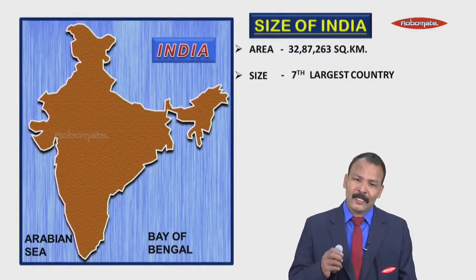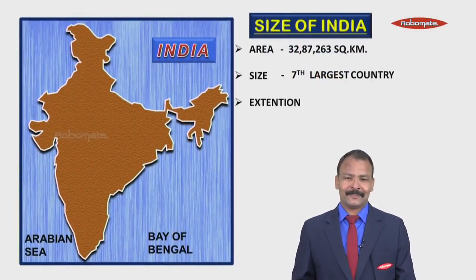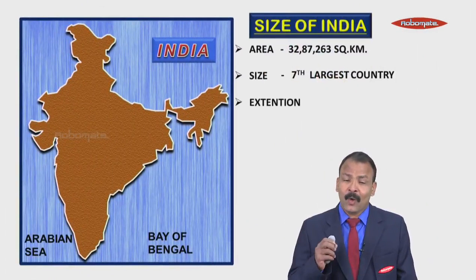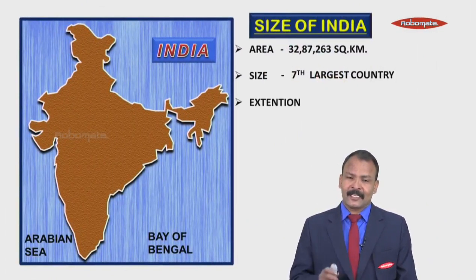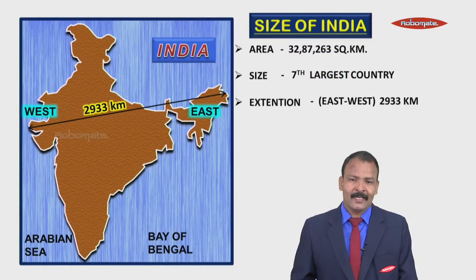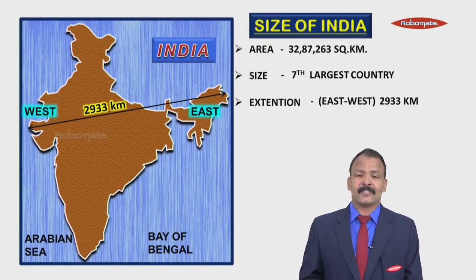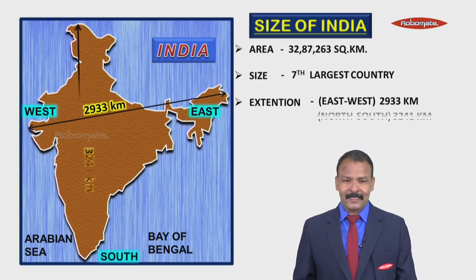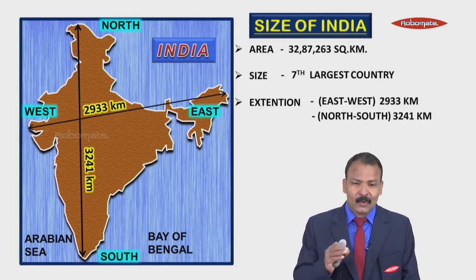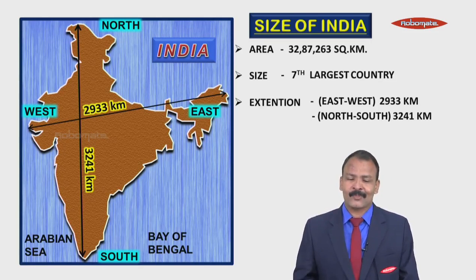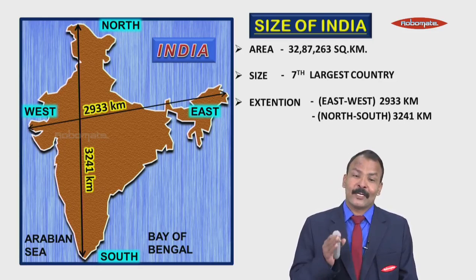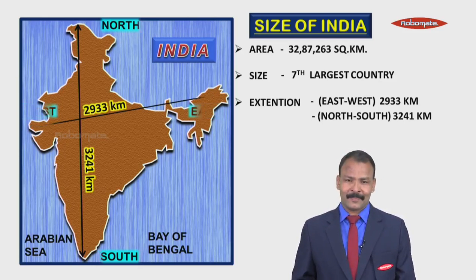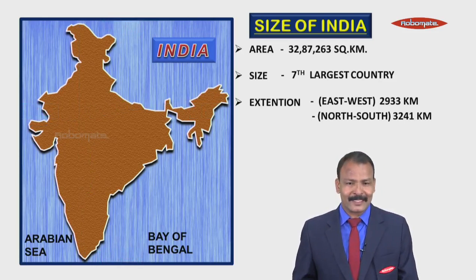Continuing with the size, the extent of India from east to west is 2933 kilometers. Similarly, the north to south distance is 3241 kilometers. Now coming to the border of the country.